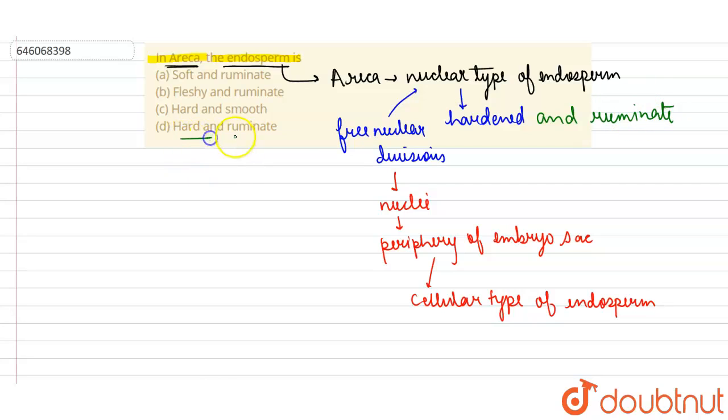and it's not soft and ruminate as well. So option D is the correct option here. I hope this answers your questions, students. Thank you.